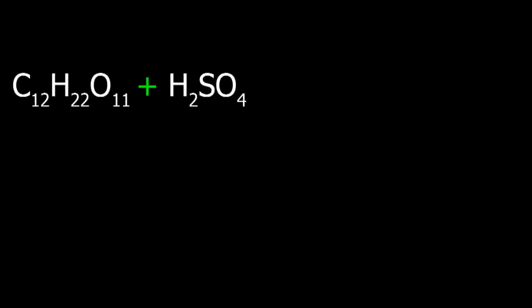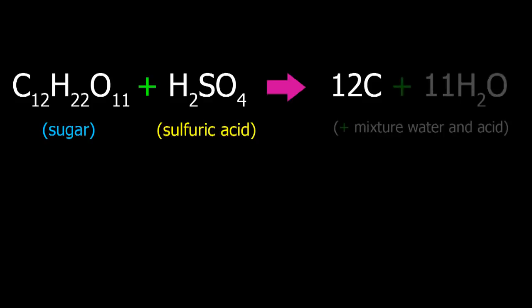Alright guys, now let me go ahead and explain the chemical reaction. Whenever sulfuric acid reacts with sugar, and remember, a sugar molecule consists of three different elements: carbon, hydrogen, and oxygen. So what it's going to do is basically split the carbon, separate it from the sugar molecule, so you end up with pure carbon, and you also end up with hydrogen and oxygen, which is going to form water.